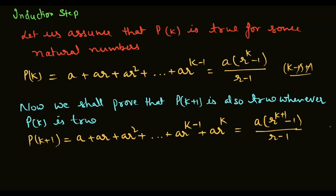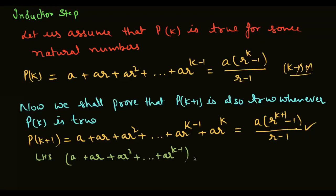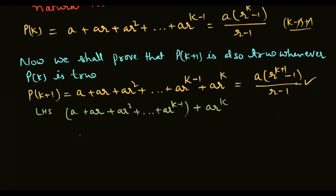LHS को prove करते हुए यह वाला term हमको लेके आना है। Now LHS = a + ar + ar² + ... + arᵏ⁻¹ वाली term को bracket में डालेंगे, और plus arᵏ। इसको solve करेंगे — यह वाली term हमारी Pk वाली term है।